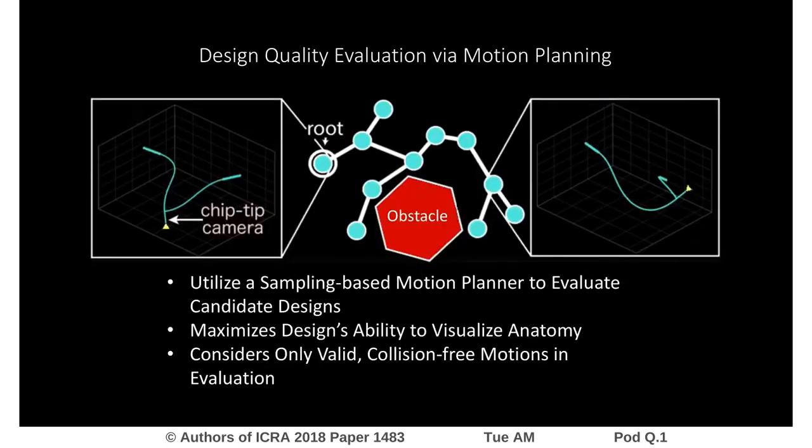In order to evaluate the quality of a design sampled by ASA, we leverage a sampling-based motion planner. We keep track of the points on the interior surface of the anatomy which are visualized at each step of motion planning. This allows us to consider the capabilities of a design to visualize the anatomy via collision-free motions.